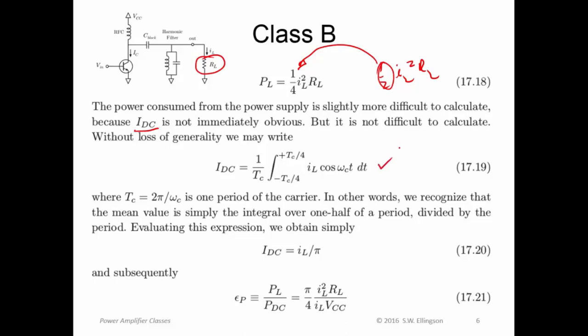It's a simple integral. The integral is just averaging, right? So here is the waveform. We're going to integrate that over the appropriate interval, divide by that interval, which is one period of the carrier. So it's a very simple integral to do. What we find is that the DC current, the time average current that is, is I sub L divided by pi. So very simple result.